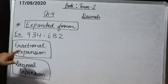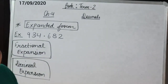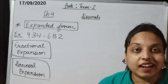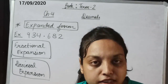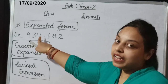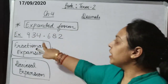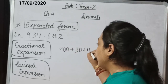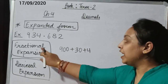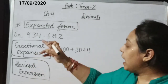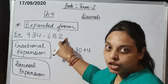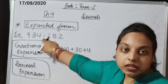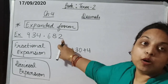In fractional expansion, we write the place value of the decimal part as a fraction. In decimal expansion, we write the place values as decimal numbers. The places after the decimal point are: the first place is the 10ths, the second is the 100ths, and the third is the 1000ths.